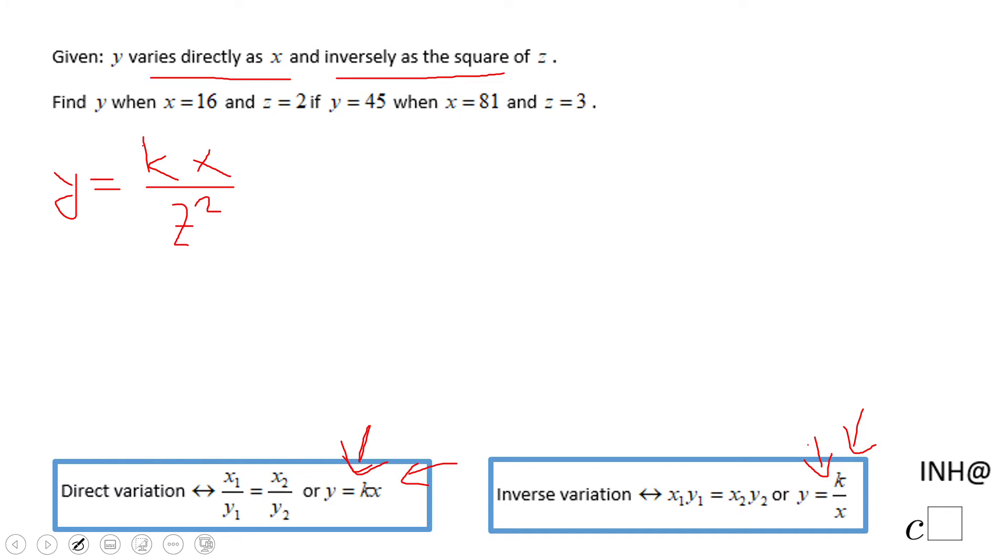Find y when x equals 16 and z equals 2, but we're going to start with the last part. Because using the last part of the problem will allow us to find k.